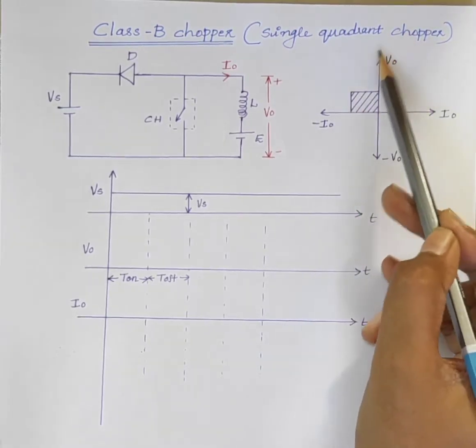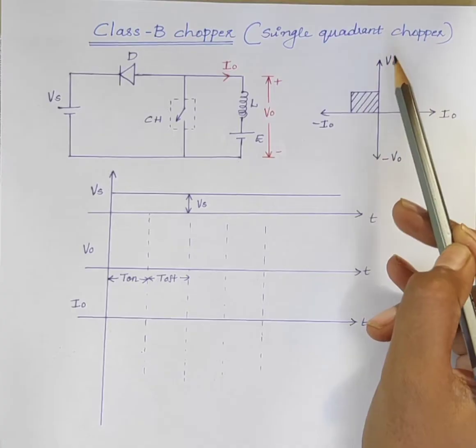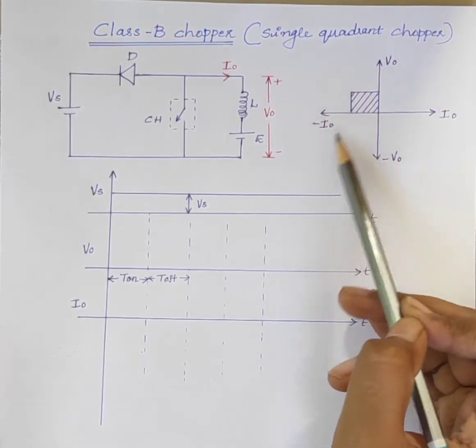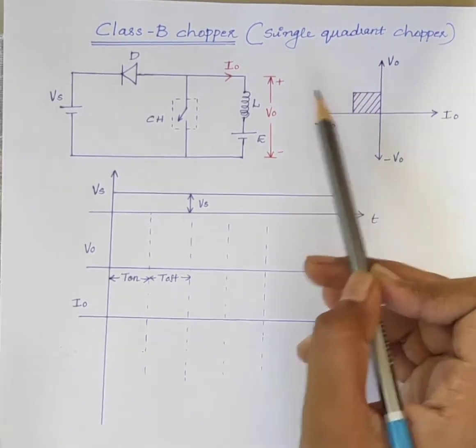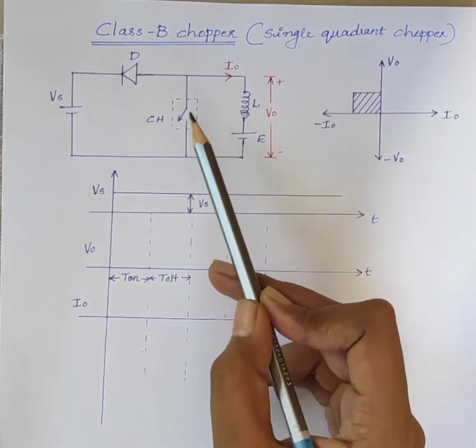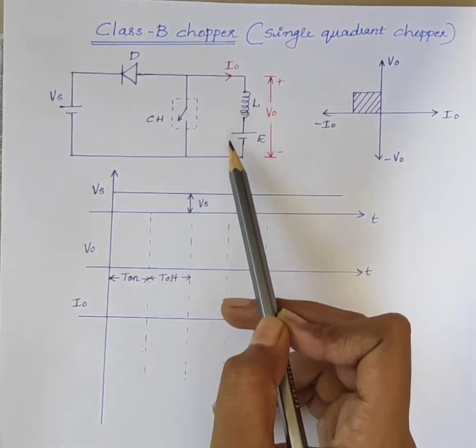This means the output voltage is always positive and the output current is always negative. The figure shows the circuit diagram of class B chopper.